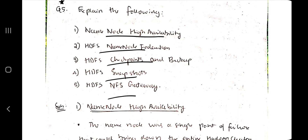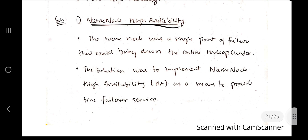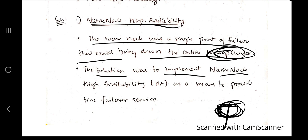Moving on to the last question — there are a few important concepts here. First is name node high availability. High availability means the system is always available. The name node was a single point of failure — if it went down, the entire Hadoop cluster would go down. So we need recovery options. The solution is to implement name node high availability, so that if the name node goes down, a backup takes its place and provides a true failover service.